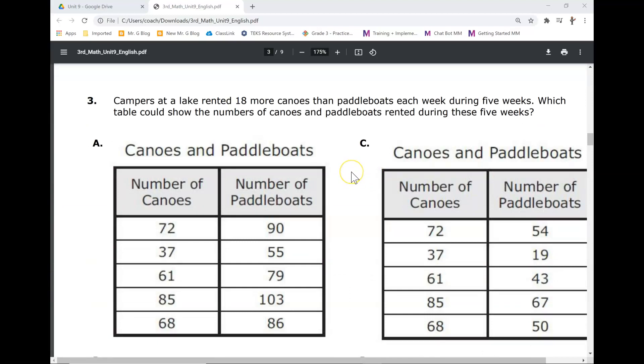Number three. Campers at a lake rented 18 more canoes than paddle boats each week during five weeks. Which table should show the number of canoes and paddle boats rented during these five weeks? Canoes and paddle boats. Number of canoes. Number of paddle boats.